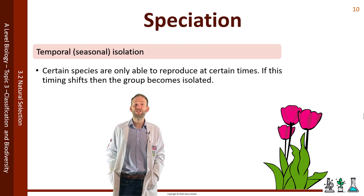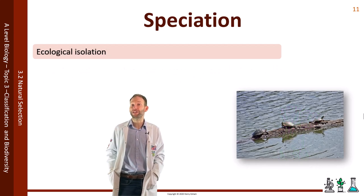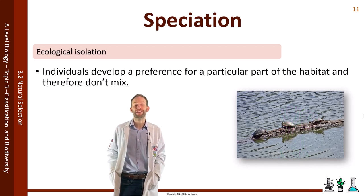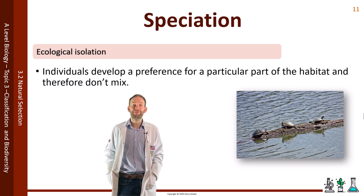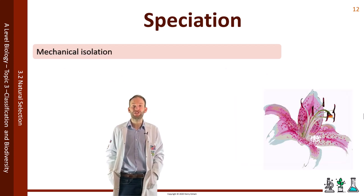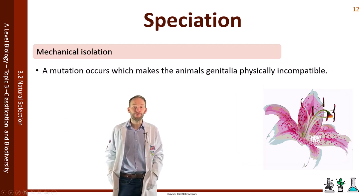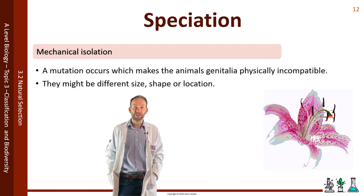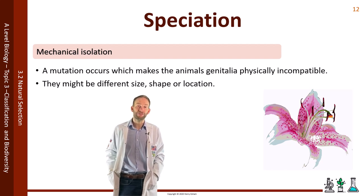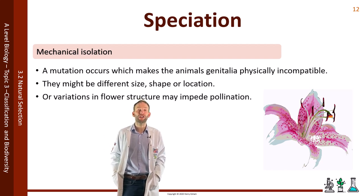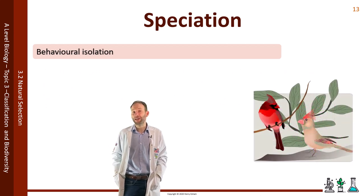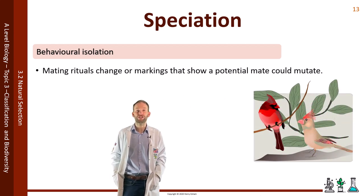Ecological isolation is when individuals develop a preference for a particular part of the habitat and therefore don't mix anymore. Mechanical isolation is when a mutation occurs that makes the animal's genitalia physically incompatible — maybe different size, shape, or location — or in flowers, different flower structure may impede pollination. Behavioural isolation is when mating rituals change or markings that attract a potential mate mutate.